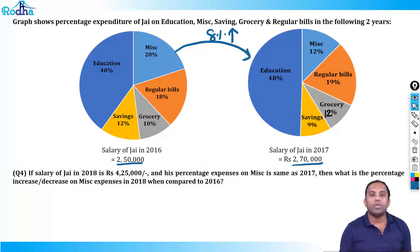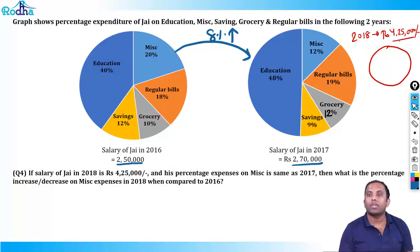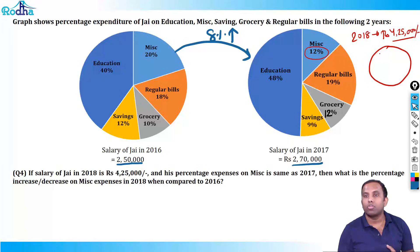Next question: if salary of Jay in 2018 is 4,25,000 and his percentage expense on miscellaneous is the same as 2017 — that is 12% — then what is the percentage increase or decrease on miscellaneous expense in 2018 when compared to 2016?